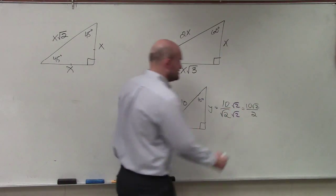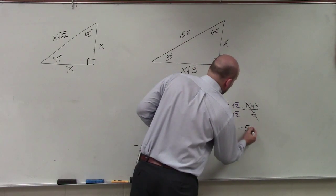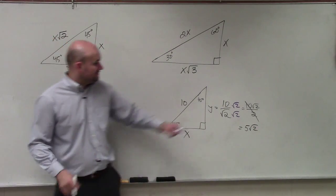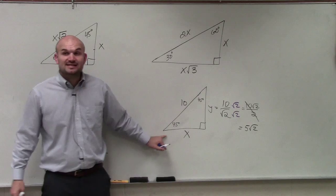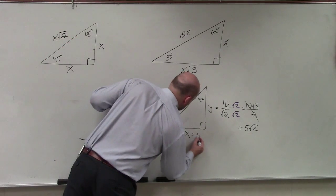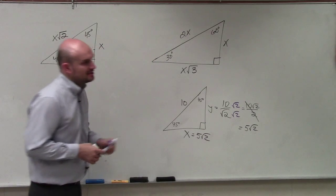Make sure also you simplify this: 5 square root of 2. Then, if that's 5 square root of 2, then this also has to be 5 square root of 2, because they're exactly the same.